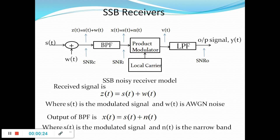Now let us look at the block diagram of a SSB radio receiver. The first block in every radio receiver will be a bandpass filter followed by the demodulator. Here, we are considering a coherent detection. Hence, the demodulator consists of the product modulator followed by the low pass filter.